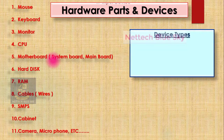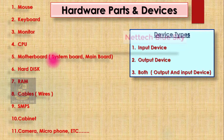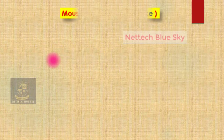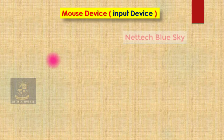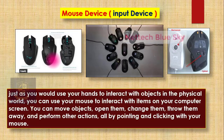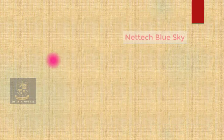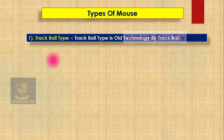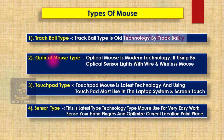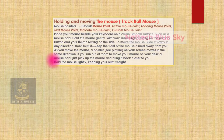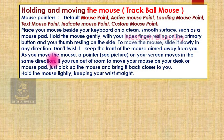I have already created videos one by one, and now I am continuing with my mouse device. I am talking about how these mouse devices work, what mouse types are available, basic parts, and the different types: trackball type mouse, optical mouse, touchpad type mouse, and sensor type mouse with very different technologies.